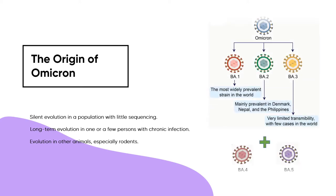In addition, Omicron was originally shown to consist of three lineages: BA.1, BA.2, and BA.3. Two new lineages, BA.4 and BA.5, were later discovered.